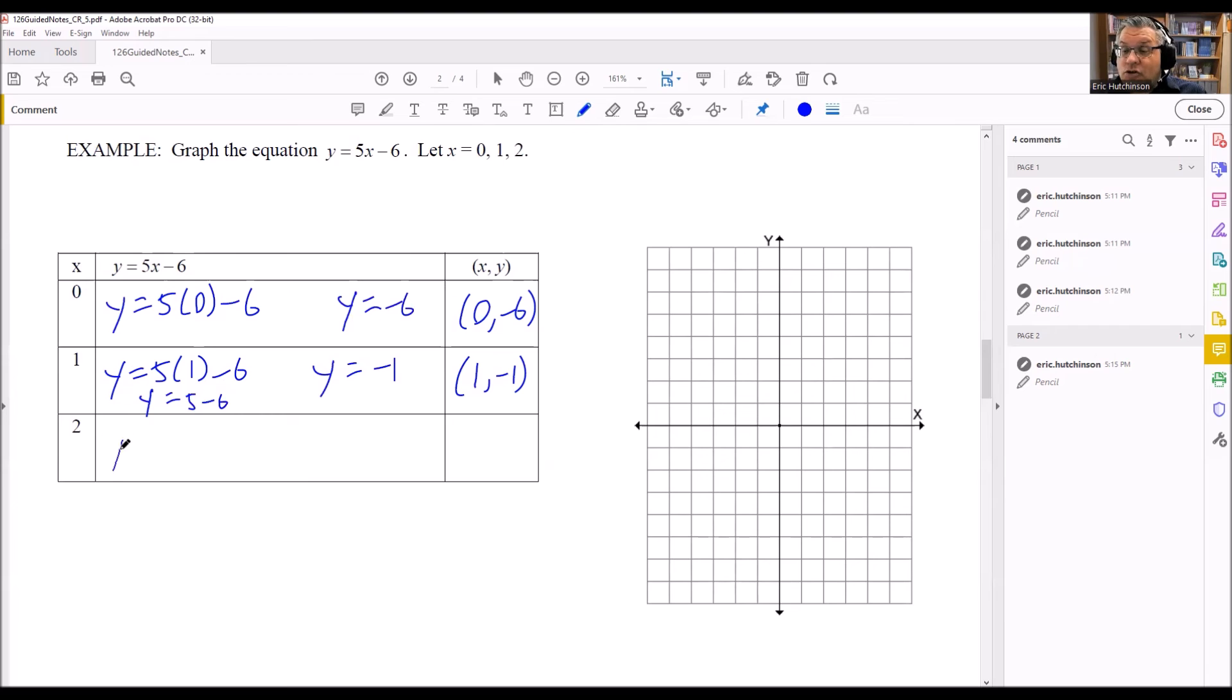Now I'm going to put in a 2. 5 times 2 minus 6. That's going to be 10 minus 6, which means I get y is equal to 4. So I get the point 2 comma 4. Now let's plot them to check to make sure we have them all in a straight line.